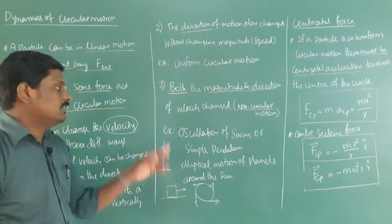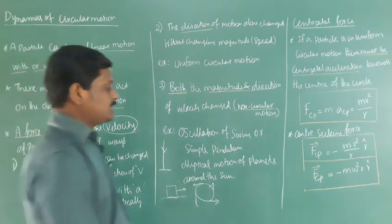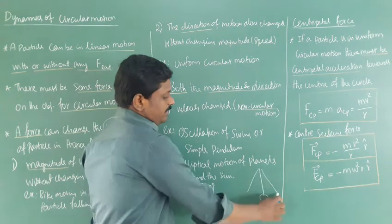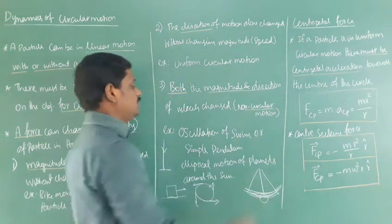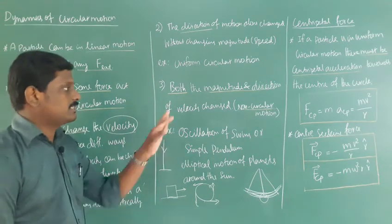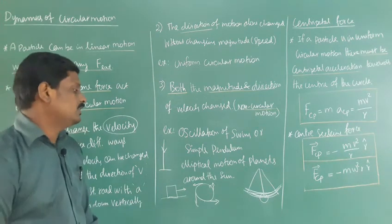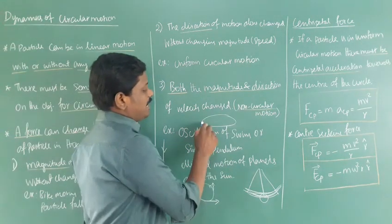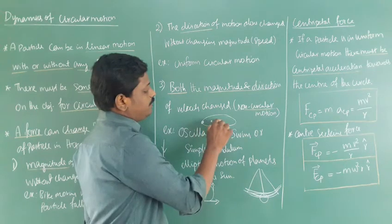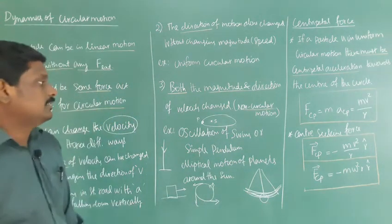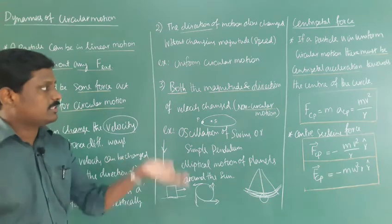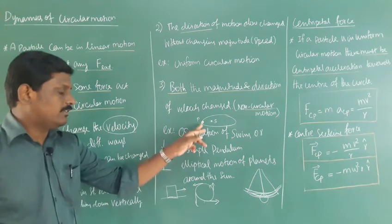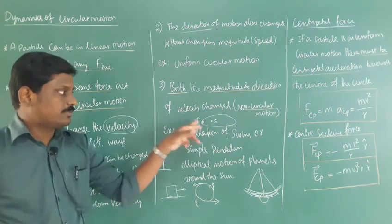Examples of non-uniform circular motion: oscillation of a spring and simple pendulum. The simple pendulum moves to and fro — it is not circular motion, so oscillation of a spring or simple pendulum is an example of non-circular motion. Also, the elliptical motion of planets around the sun — planets move in an ellipse around the sun, and here both the magnitude and direction of velocity change with respect to the sun.